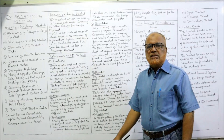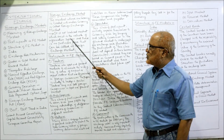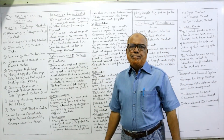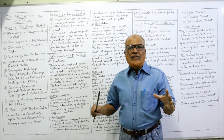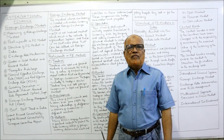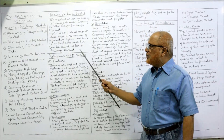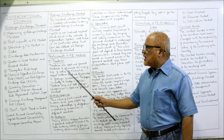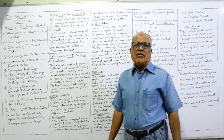The foreign exchange market — also simply called the forex market — is not localized; it does not exist at one particular place. It exists as a network of information systems, where information is passed from one person to another. This network is what we call the foreign exchange market.